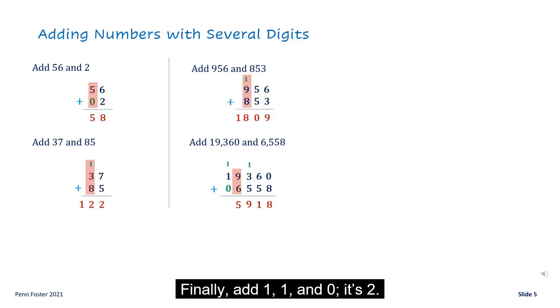Finally, add one, one, and zero. It's two. The final sum is twenty-five thousand nine hundred and eighteen.